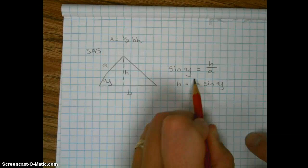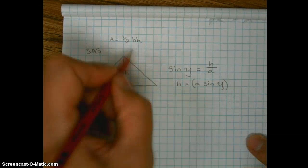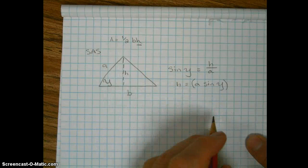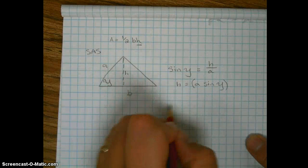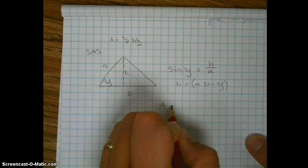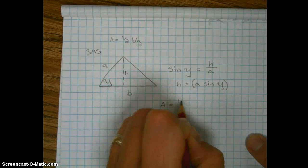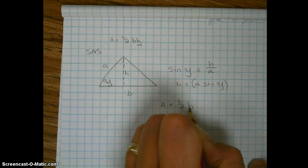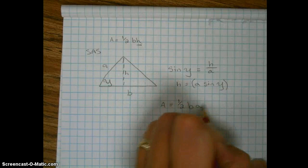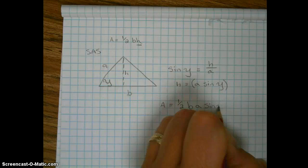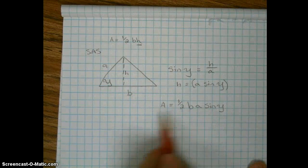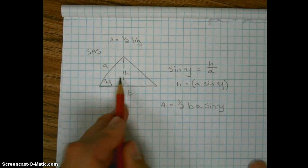And then we're going to plug this into this formula up here. So we're going to have a formula, area is equal to one-half the base times A times the sine of gamma. And that's going to be our formula that we would use in this situation right here.